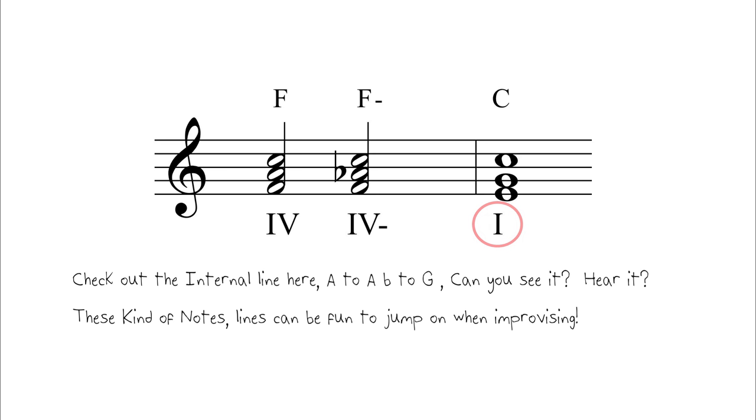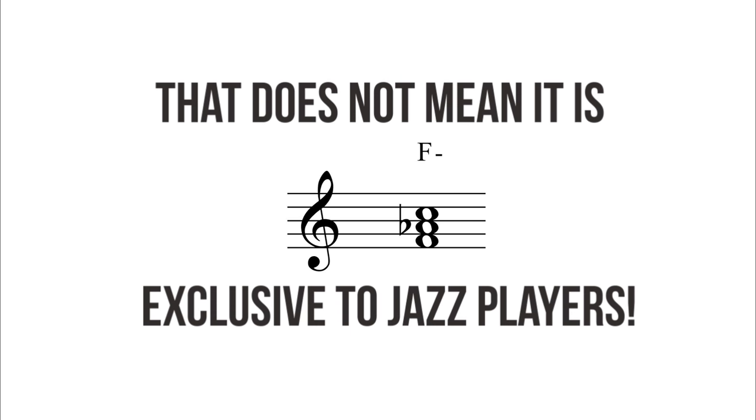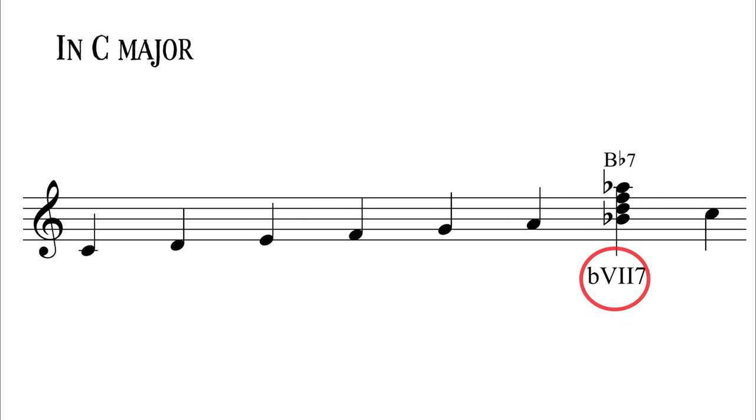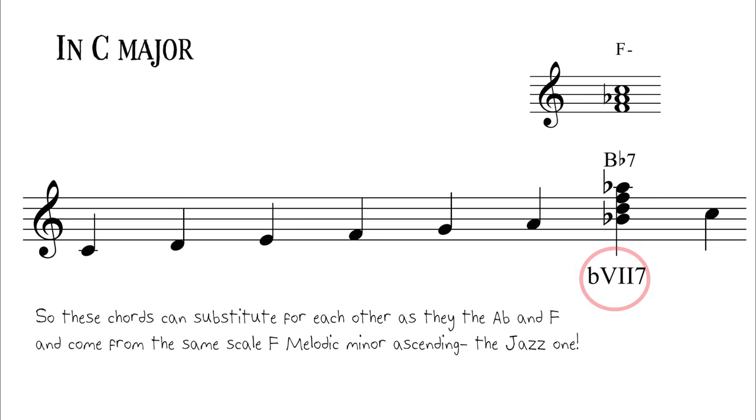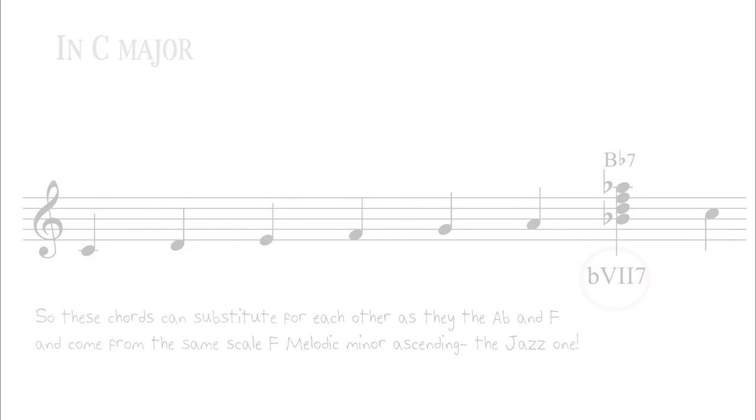There is a really cool substitution for this IV minor chord that jazz players use. It's called the flat 7-7 chord, which contains the notes A-flat and F. A further, deeper explanation can be found in this video here.